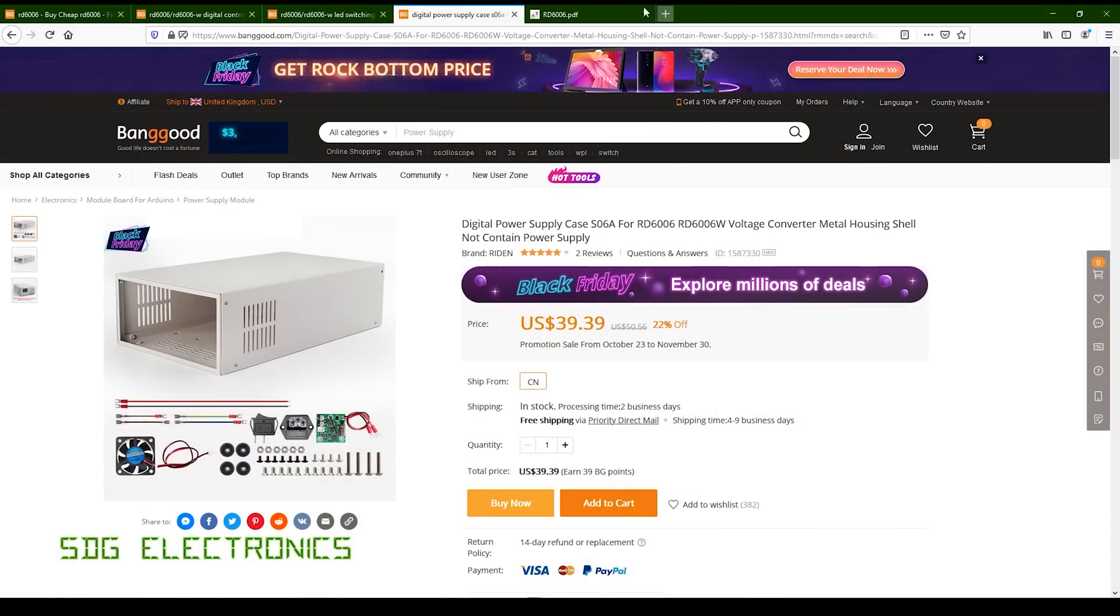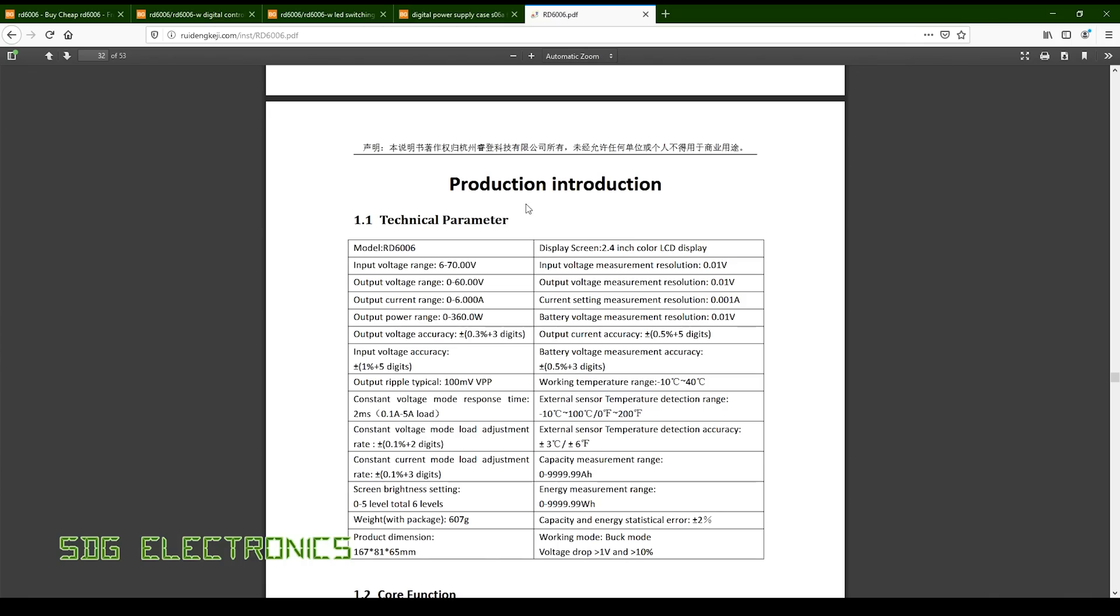Now if we take a look at the specifications, there's a PDF associated with the power supply. It says input voltage range 6 to 70 volts, output voltage range 0 to 60. Now I'm not sure if it has a boost converter or whether the input voltage has to be higher than you want to output. Output current range 0 to 6 amps and 360 watts output capability.